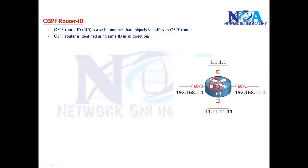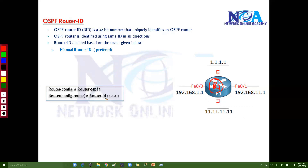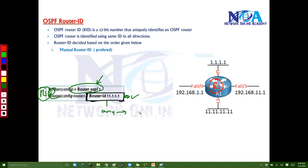The question is: which interface IP will be the Router ID? By default, the first preference is given to manual configuration. We can manually go inside the router and configure the Router ID with a command. This address can be any IPv4 address — even a Class D or Class E address — it doesn't make any difference.